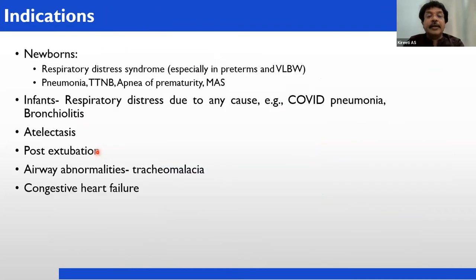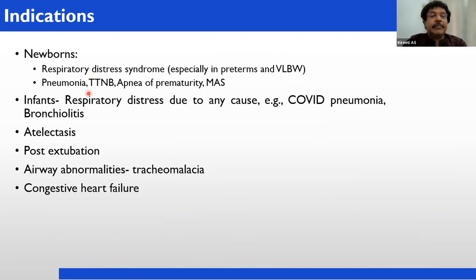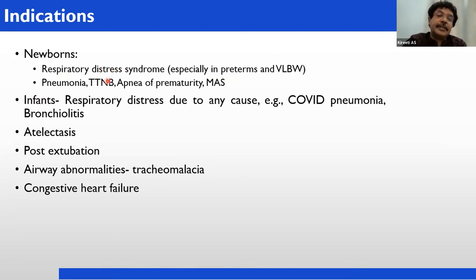To summarize: CPAP prevents atelectasis, increases pharyngeal cross-sectional area, reduces work of breathing, improves mucociliary function, avoids bronchoconstriction, increases lung volume and tidal volume, improves alveolar recruitment, improves ventilation-perfusion matching, and reduces apnea. In newborns, CPAP is indicated in respiratory distress syndrome — especially in preterm and very low birth weight babies — and we measure the Silverman and Anderson score. It is also indicated in pneumonias, transient tachypnea of newborn, apnea of prematurity, and meconium aspiration syndrome.